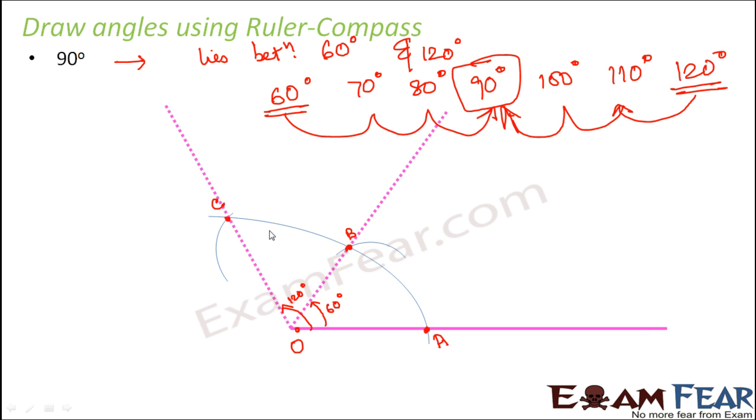So we will actually bisect this angle so that we can find out the exact midpoint of these two angles. And how do we draw angle bisectors? So one end point is B and one end point is C. So taking B as the center and radius slightly more than half of BC, we draw an arc like this.